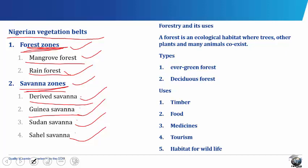The guinea savannah is the largest vegetation belt in Nigeria. It covers the sparsely or scarcely populated areas of the middle belt. This region is characterized by natural grassland, sparse woodland or trees, and is dominated by tubers and grain crops. Animals found here include large animals like buffaloes, lions and elephants, which are kept in game reserves, while smaller animals like giant rats, wild cats and rabbits move about freely.